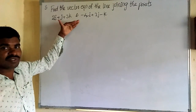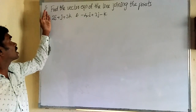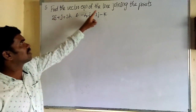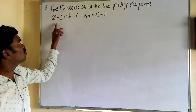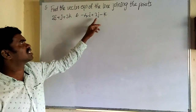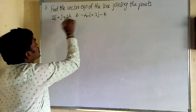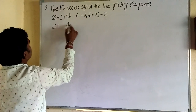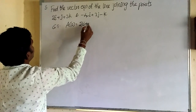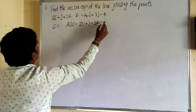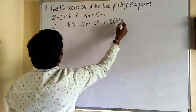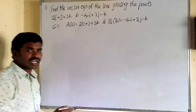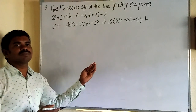Question 8: Find the vector equation of the line joining the points 2i + j + 3k and −4i + 3j − k. Two points are given. Let point A(a) = 2i + j + 3k and point B(b) = −4i + 3j − k. Since two points are given, the vector equation is r̄ = (1 − t)ā + tb̄.